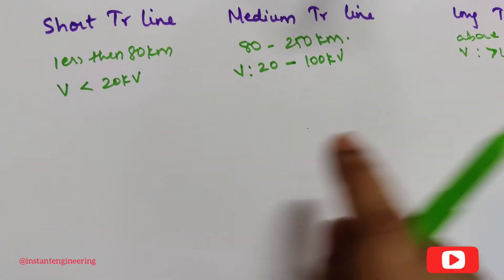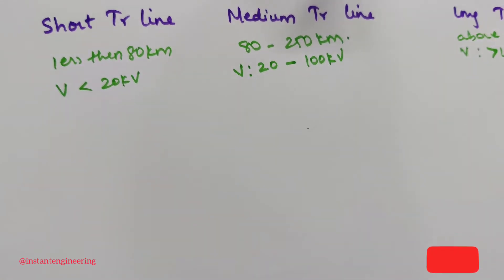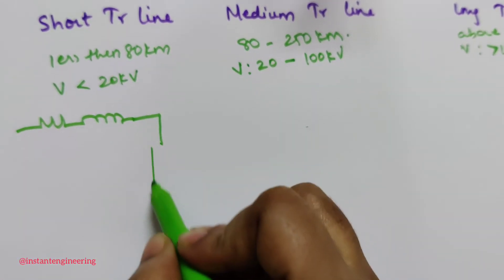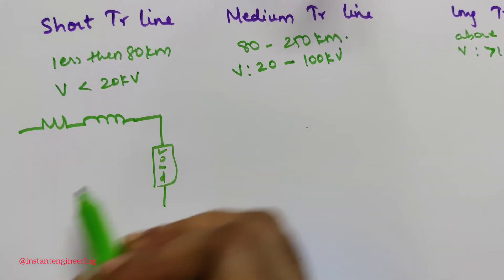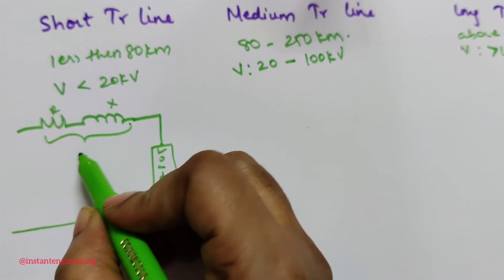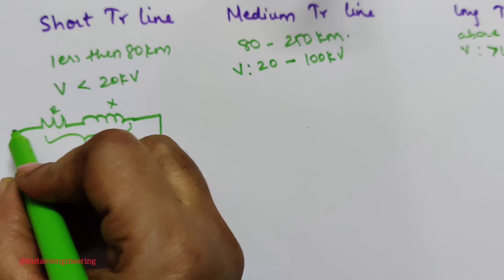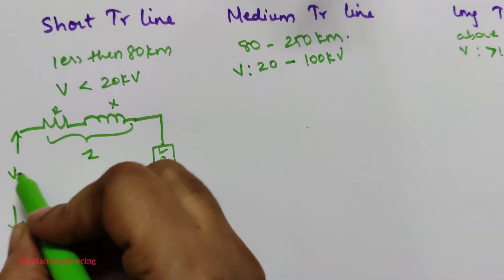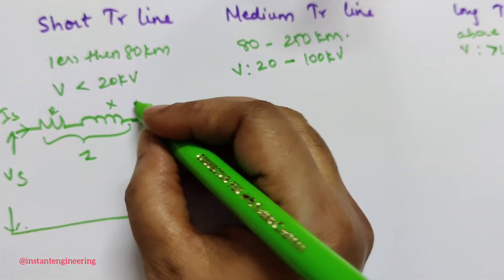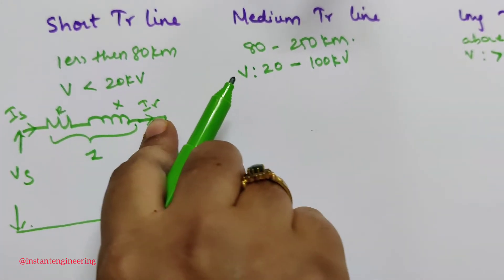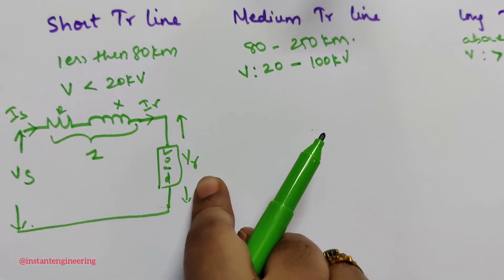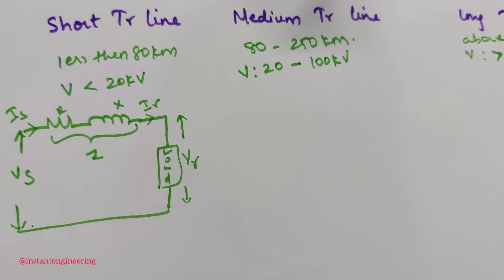The equivalent circuit of a short transmission line has one resistor R, one inductor X, and a load. Together R and X form impedance Z. The sending-end voltage is Vs and sending current Is; at the receiving end we have current Ir and receiving voltage Vr across the load.